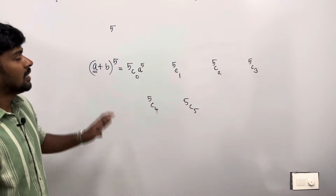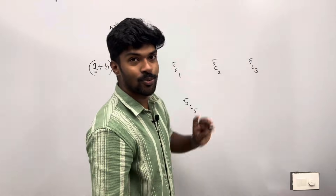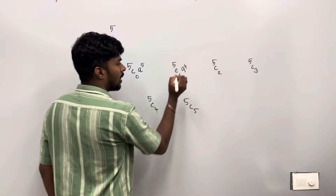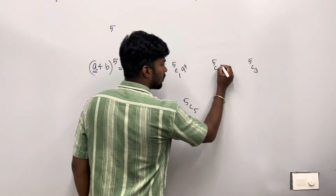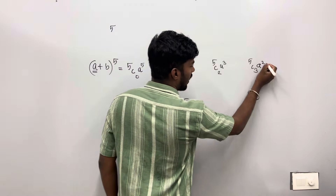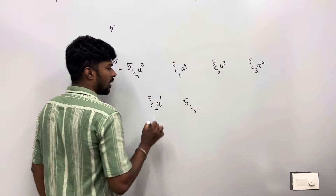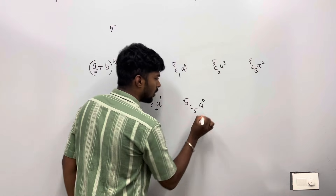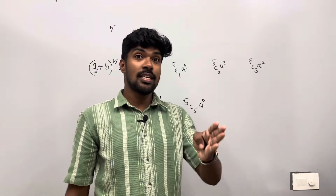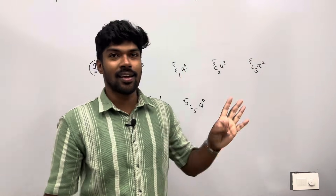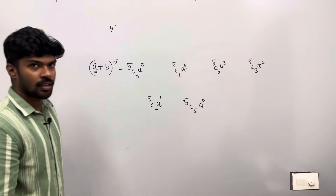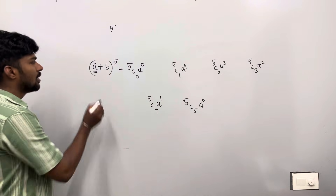So we get A raised to 5, A raised to 4, A raised to 3, A raised to 2, A raised to 1, A raised to 0. You can't get 0 — it becomes 1. If we are going to get 0, it becomes 1. This is the number.